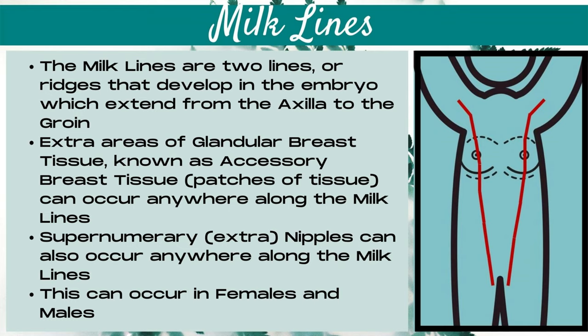The milk lines are two lines or ridges that develop in the embryo, which extend from the axilla to the groin. Extra areas of glandular breast tissue, known as accessory breast tissue, are patches of glandular tissue that can occur anywhere along the milk lines — anywhere that the milk lines failed to atrophy in the fetus. Supernumerary or extra nipples can also occur anywhere along the milk lines, and this can happen in both females and males.